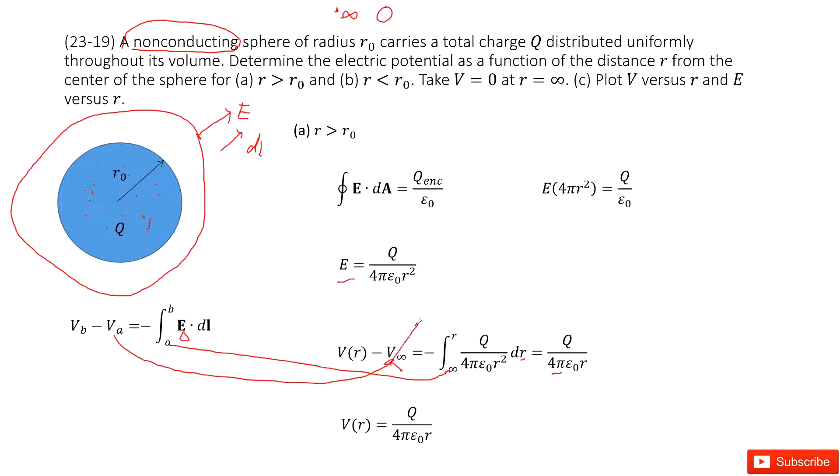And as we talked about at infinity, this term becomes zero. So finally, we get the electric potential at the first case is just equal to this function.